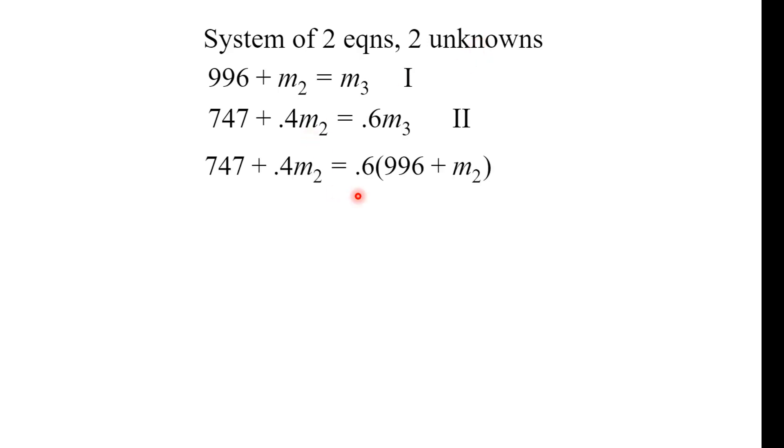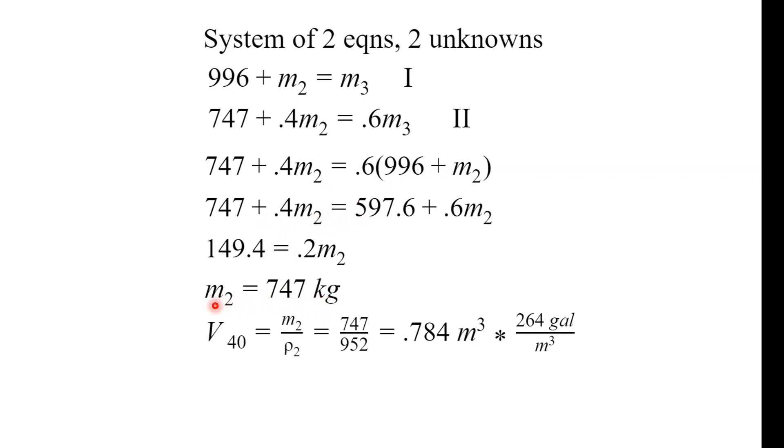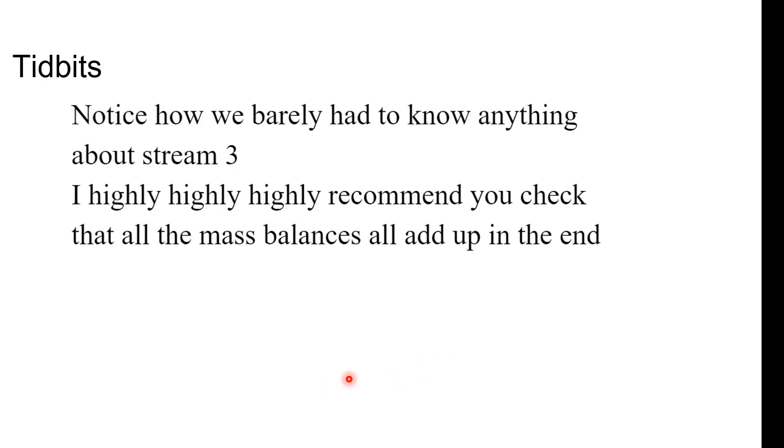Quickly going through the algebra, you can simplify and solve for M2. Distribution, factoring, and we get M2. Now, we have M2 in terms of the kilograms, but they want us to solve for the volume. And using the same principle and the same conversion factor, we get an answer of 207 gallons in the volume 40.